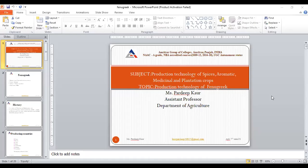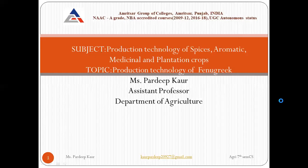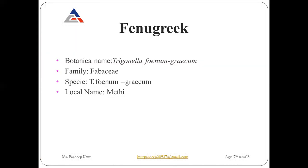Today we will discuss the production technology of fenugreek. We have completed all the spice crops one by one, and after that we will discuss different medicinal crops. First is fenugreek. Its botanical name is Trigonella foenum-graecum, and it belongs to the family Fabaceae.